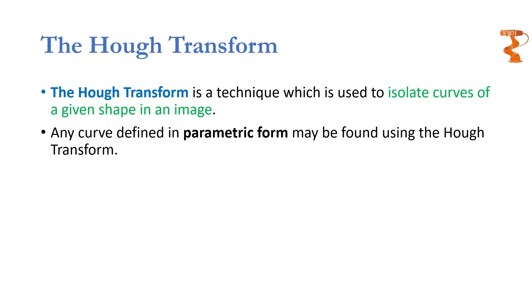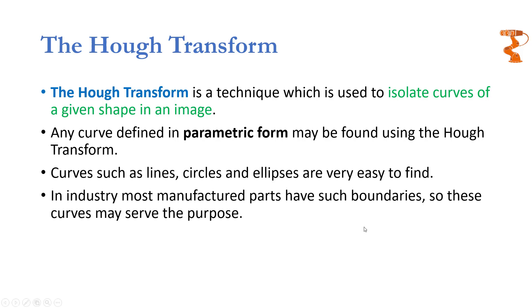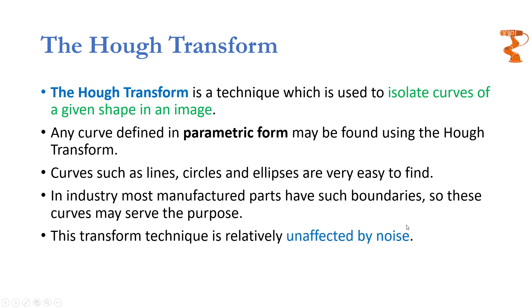Hough Transform can figure out where a curve is and which curve it is — for example, whether it is a spline, a line, an ellipse, or a disc. The utility of Hough Transform comes from the fact that in industry, most manufactured parts have straight boundaries or circular or spherical boundaries. To inspect and locate such parts, Hough Transform is a very powerful tool. Additionally, this technique is relatively unaffected by noise, and when I explain the algorithm, you will see how noisy data cannot affect the output of Hough Transform.